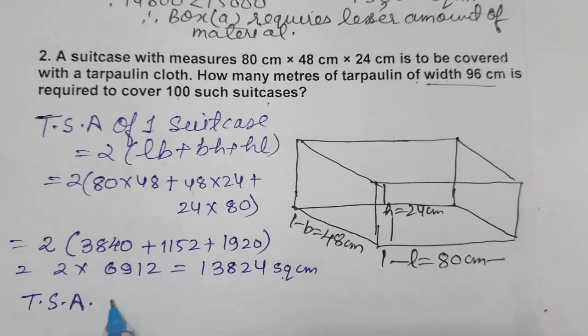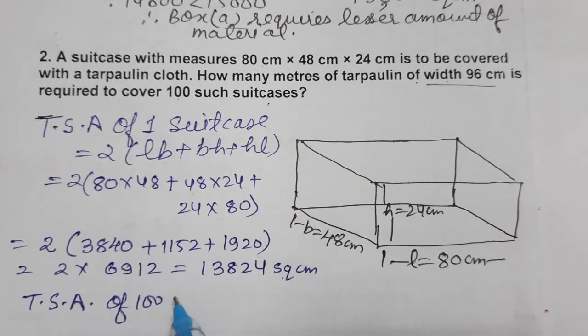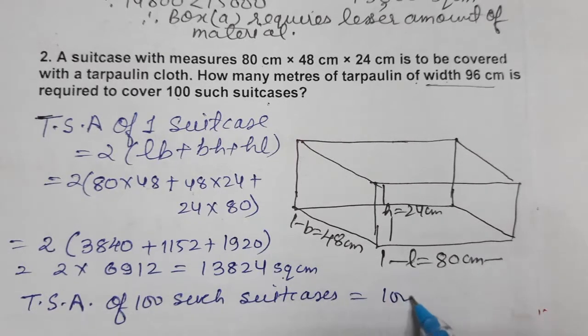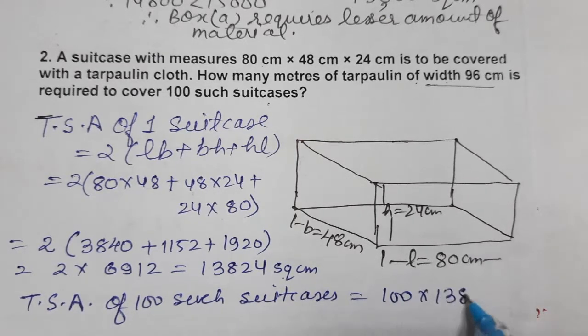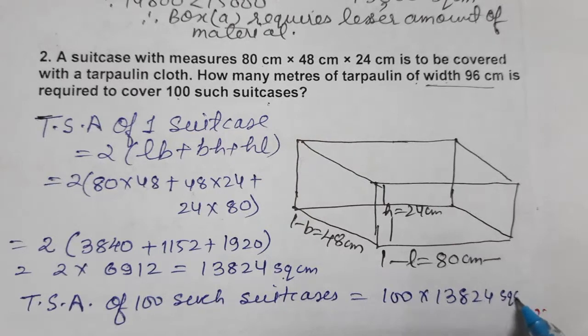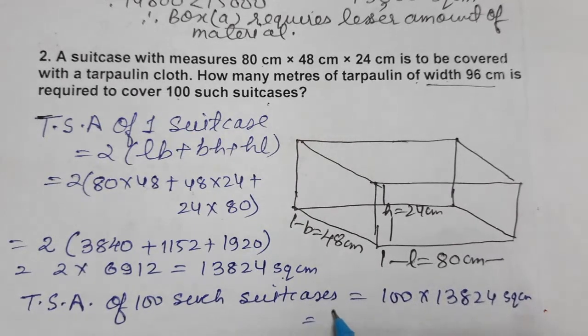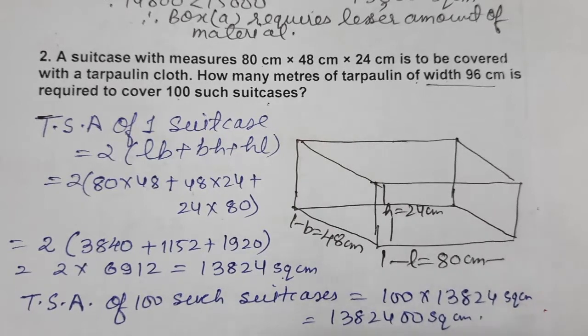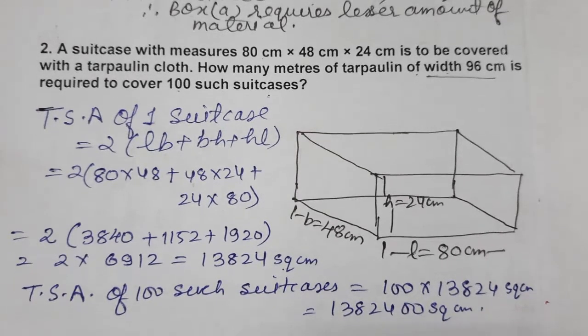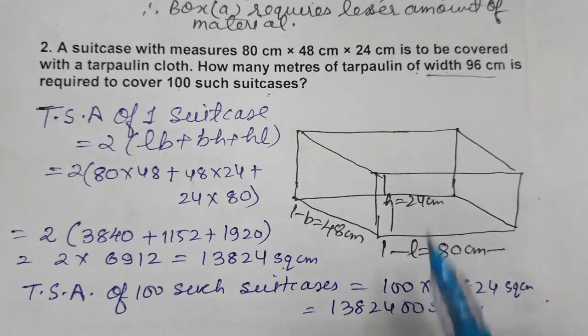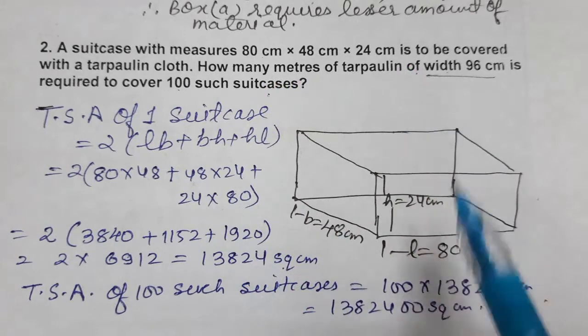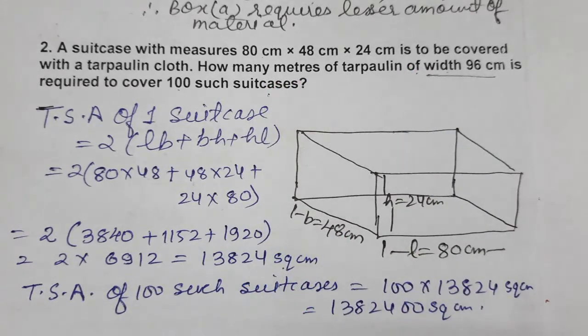Total surface area of 100 such suitcases: we multiply 100 with 13,824 square centimeters, which gives us 1,382,400 square centimeters. Now we need to convert to meters—how many meters of carpet is required?